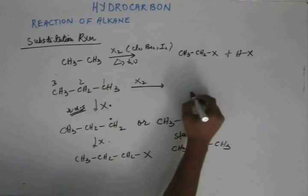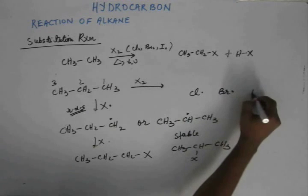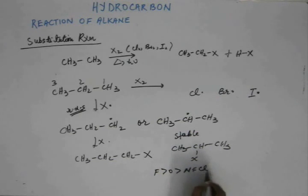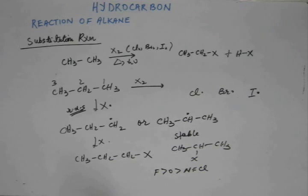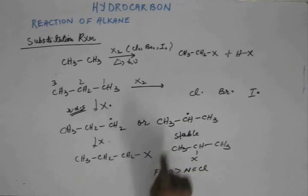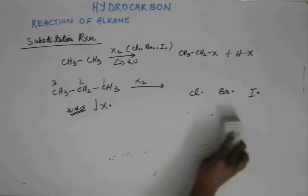Now let's see which halogen shows kinetically controlled reaction and which shows thermodynamically controlled reaction — that comes from the stability of the reagent. Chlorine is highly reactive and has a very high electronegativity value, close to nitrogen. Whenever you have electron deficiency in a highly electronegative atom, it is highly unstable, because electronegative atoms are good at keeping electrons but not at keeping electron deficiency. So the Cl dot is an unstable free radical that wants to remove its instability as soon as possible — hence chlorine's reaction is kinetically controlled.